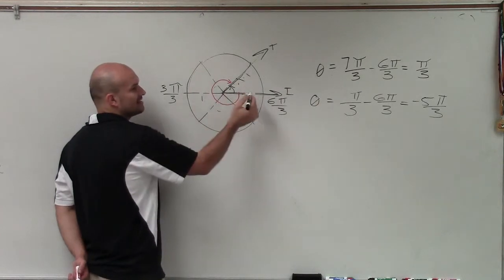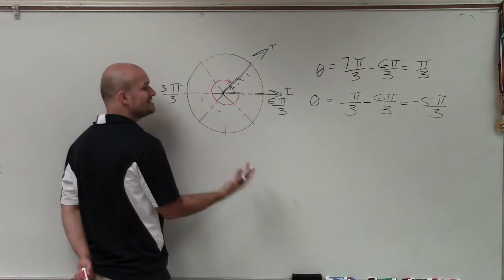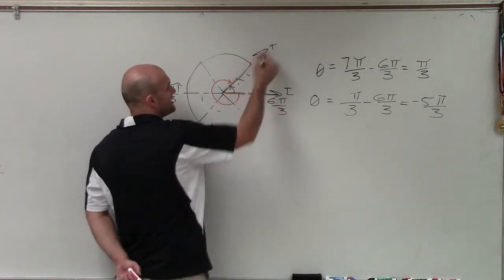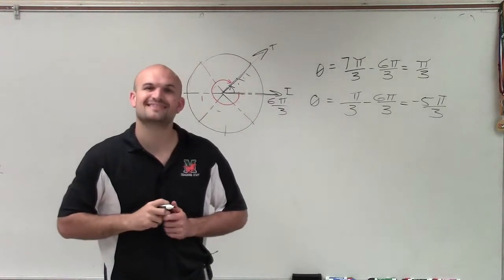And if we were to graph -5π/3, it looked like this. Remember, negative is in clockwise direction. So -1π/3, -2π/3, -3π/3, -4π/3, -5π/3. You can see these are coterminal angles because they still start in the same initial and they end on the same terminal side. So there you go, ladies and gentlemen. That is how you determine coterminal angles. Thanks.